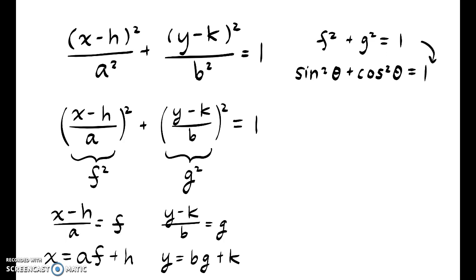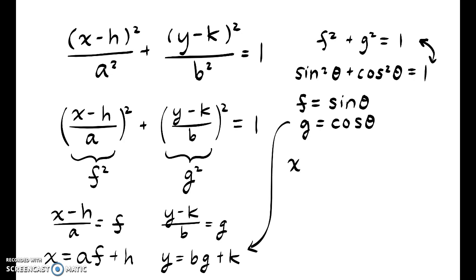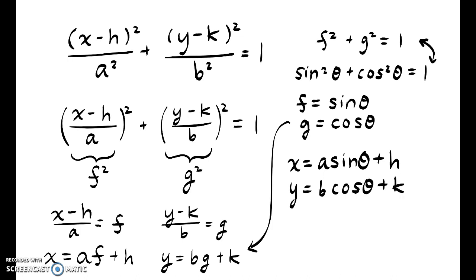When we see these two parallels, we could say: let f equal sine of theta and g equal cosine of theta. Then we can plug them back into our equations. So x is equal to a times f, which is sine of theta, plus h. And y is equal to b times g, which is cosine of theta, plus k. This expresses x and y both in terms of our independent parameter, theta.